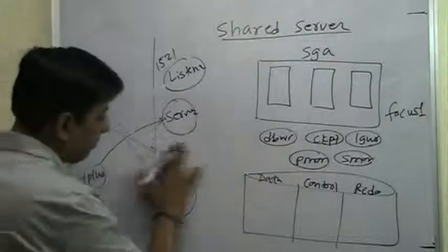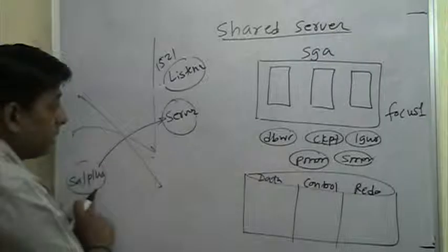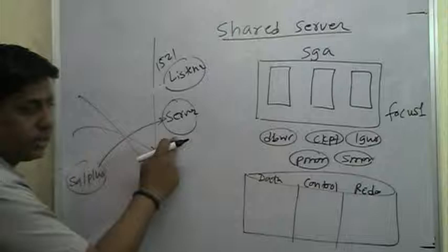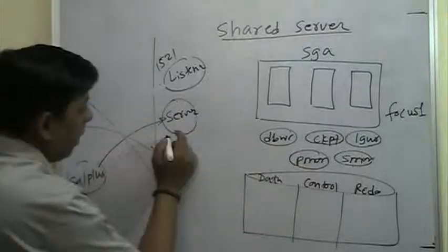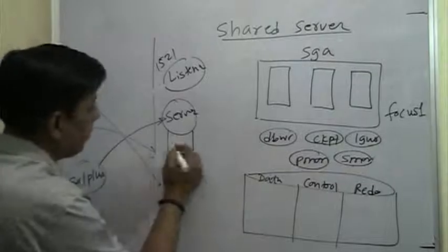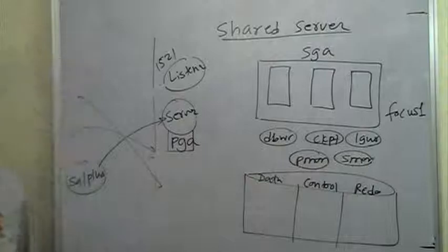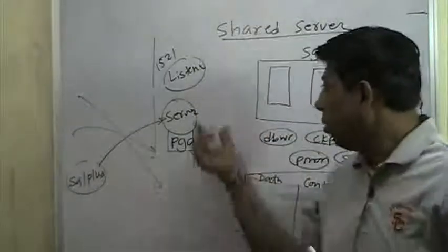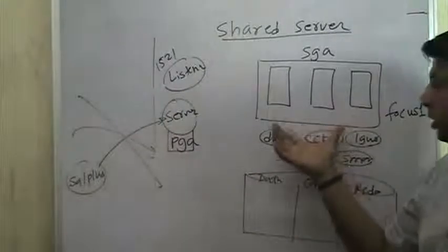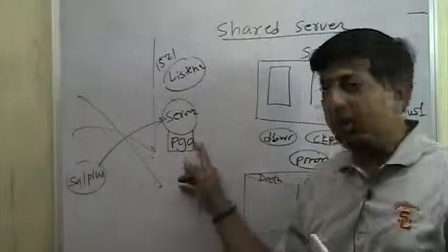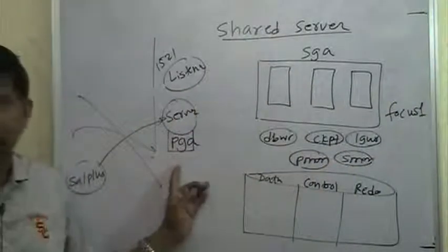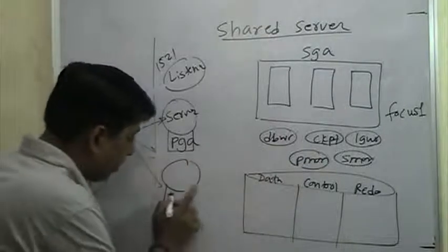The main thing to understand about a dedicated server process: it is dedicated to your client, meaning it is going to work only on the SQL statements submitted by that client. This one program is responsible for giving answers to the SQL*Plus client. The memory area associated with the dedicated server process is called the Program Global Area - PGA. The PGA is a private area only for that server process, meaning no other process can access the information in this area.